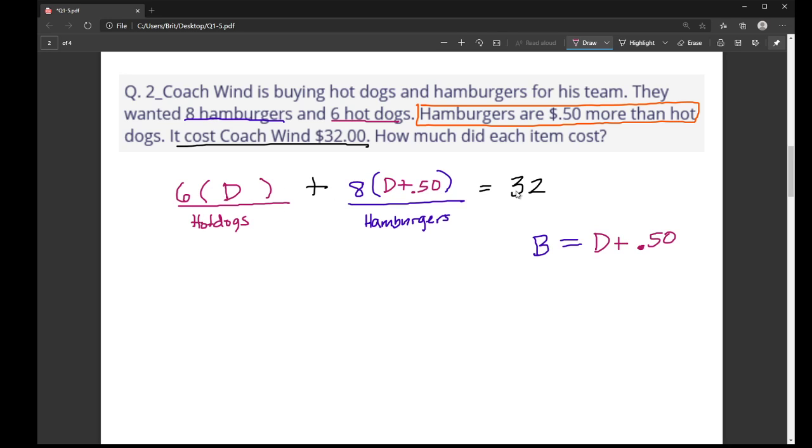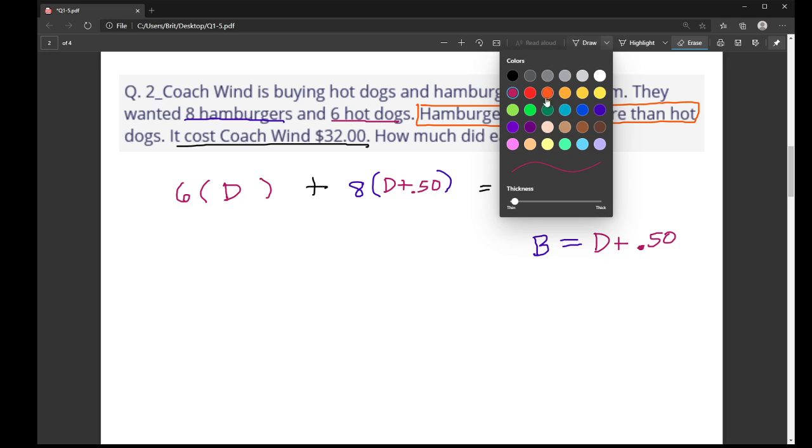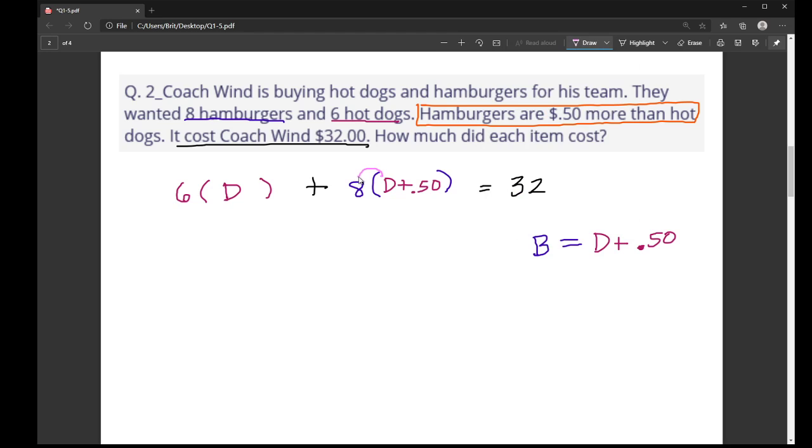So now my equation here with hamburgers and hot dogs, all that it has is one variable in there. It just has the unknown hot dog value, D. So I can actually go through and solve. So what I'm going to do is I'm going to erase my text that's under here. And let's actually, let's get it done. So the first thing I would do here is I would use the distributive property right here on this set of parentheses. That way we don't have these parentheses anymore. So I have 8 times D is 8D. And then 8 times 50 cents is 4.